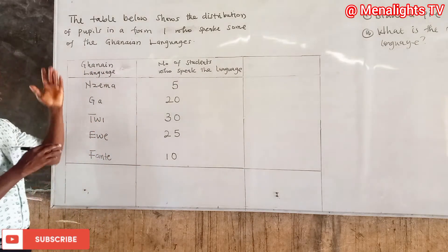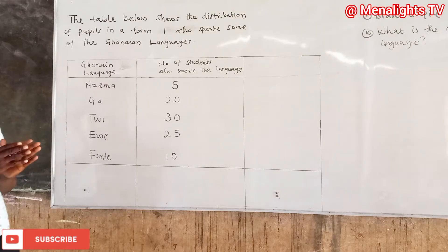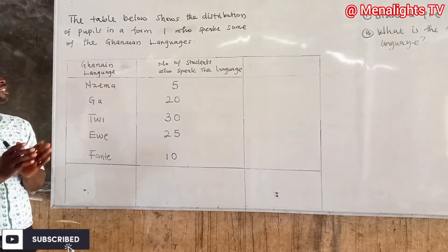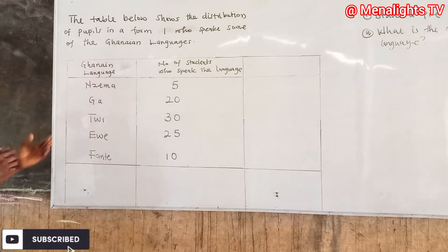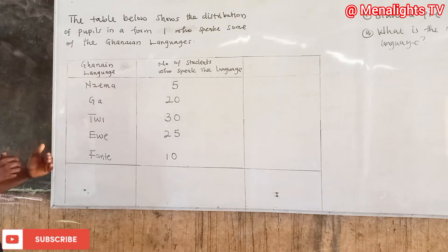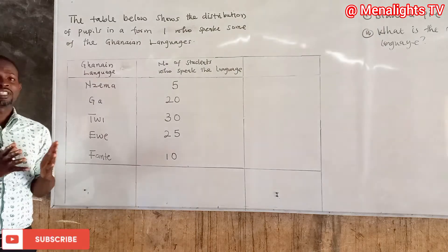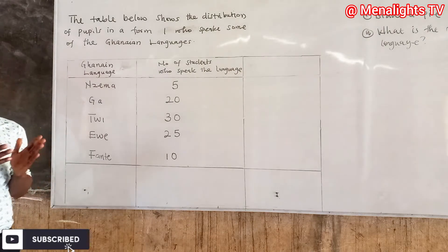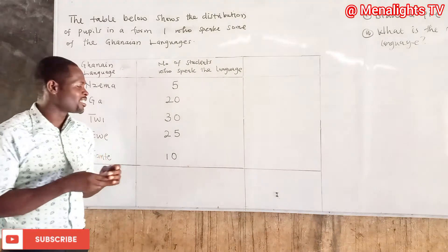We have a question here: the table below shows the distribution of pupils in Form 1 who speak some Ghanaian languages. The languages they spoke were Nzima, Ga, Twi, Ewe, and Fanti. You have to use this data to draw a pie chart.